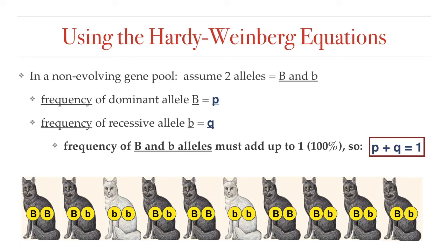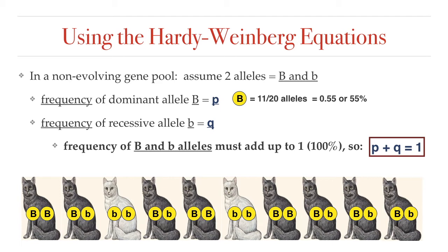Since there are only two alleles for the fur color gene, the frequency of the black allele and the frequency of the white allele must add up to 1 — that is, 100% of the alleles will be either big B or little b. So p plus q must equal 1. This is one part of the Hardy-Weinberg equation. In this example, we have 10 cats, each with two copies of the gene, so there are 20 copies total. Eleven of the 20 copies are the big B allele, so p = 0.55, and 9 are the little b allele, so q = 0.45.